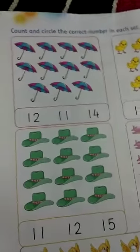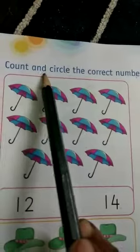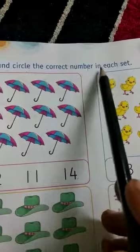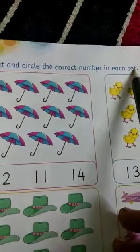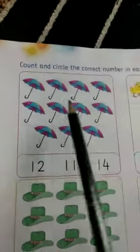Now what will we do? Count and circle the correct number in each set. Children, now count.